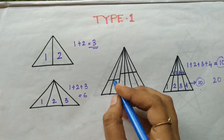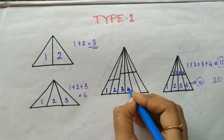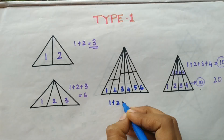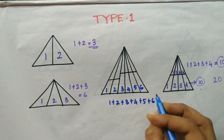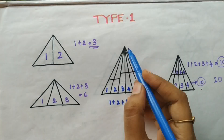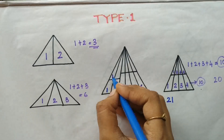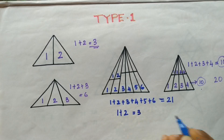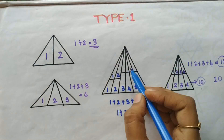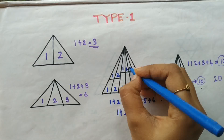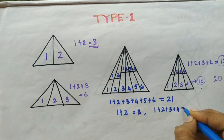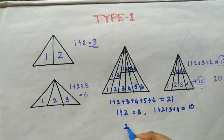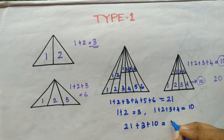Let's try this particular figure. For the first base, the bigger triangle: one, two, three, four, five, six — so one plus two plus three plus four plus five plus six equals twenty-one. For the smaller one: one, two — one plus two equals three. This particular part has same base: one, two, three, four — one plus two plus three plus four equals ten. So the answer is twenty-one plus three plus ten, which is thirty-four.